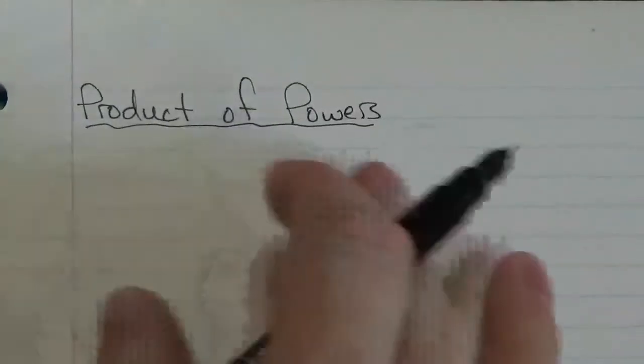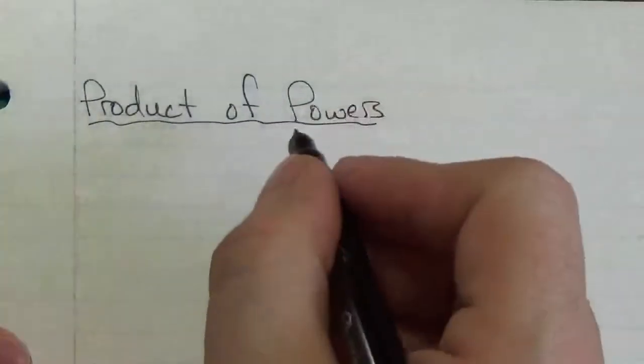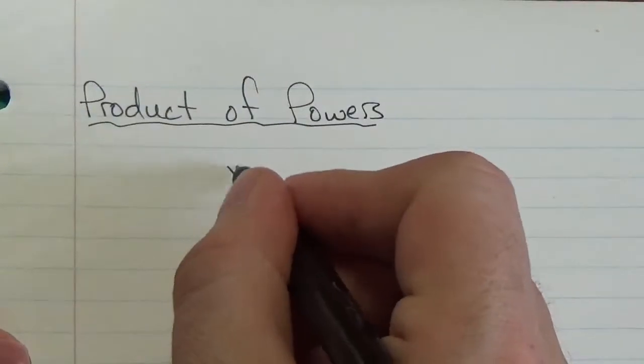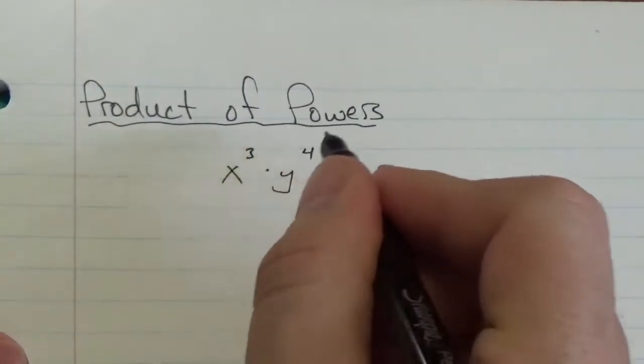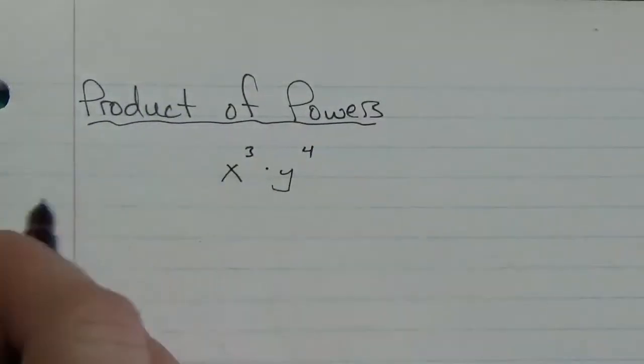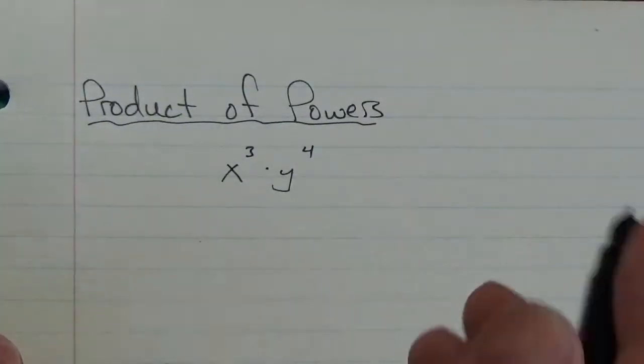Okay, hi everybody. So now let's talk about the product of powers. So what does that mean here? Let's say we've got x cubed multiplied by y to the fourth. Now what does that mean and what can we do with it here?